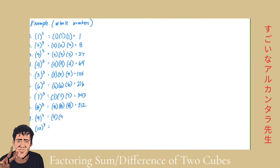Continuing: 7 times 7 is 49, times another 7 gives us 343. Then 8 times 8 is 64, times another 8 gives us 512. Then 9 times 9 is 81, times another 9 gives us 729. And lastly, 10 times 10 times 10 gives us 1,000. So these are the cubes of whole numbers from 1 to 10: 1, 8, 27, 64, 125, 216, 343, 512, 729, and 1,000.